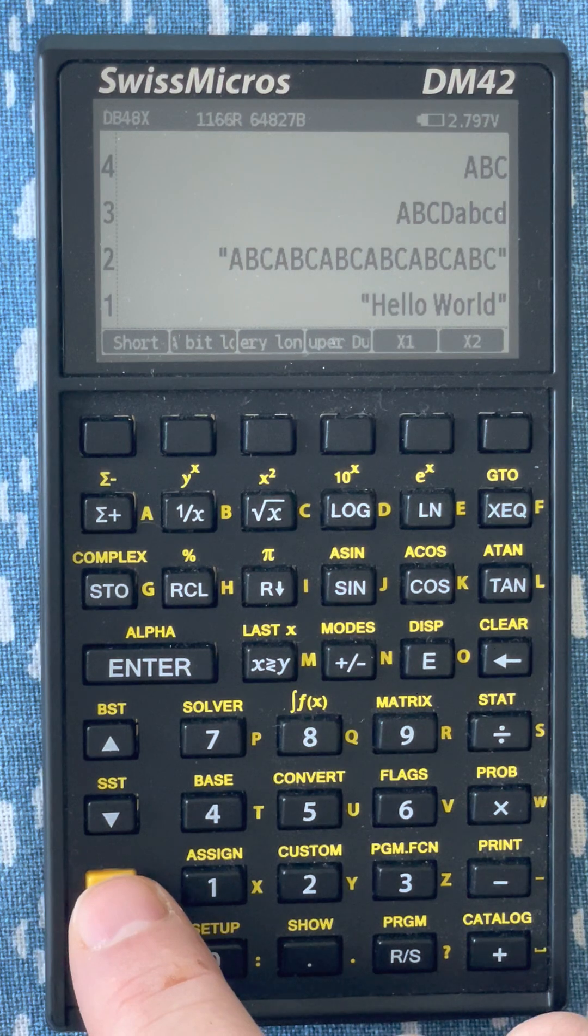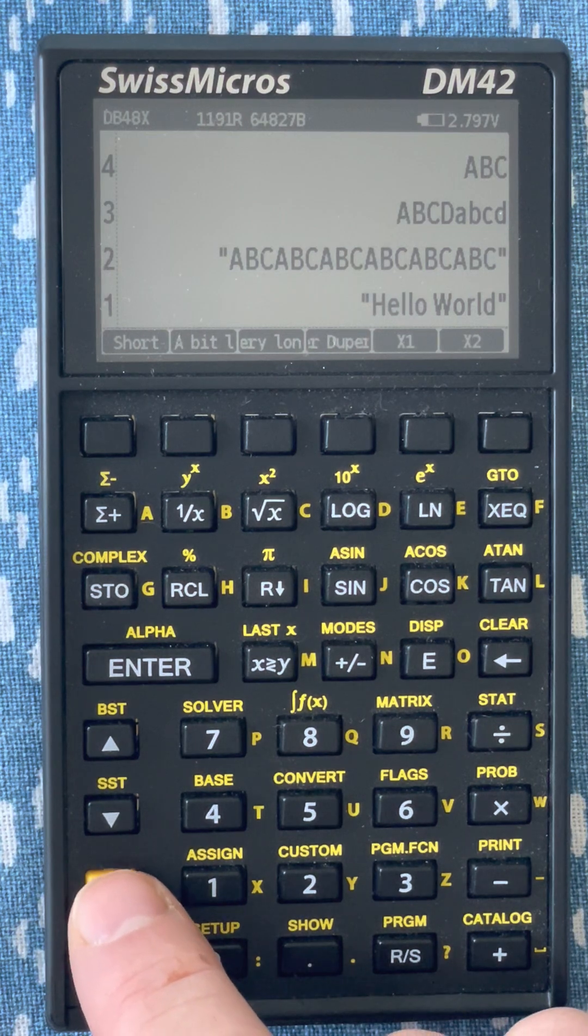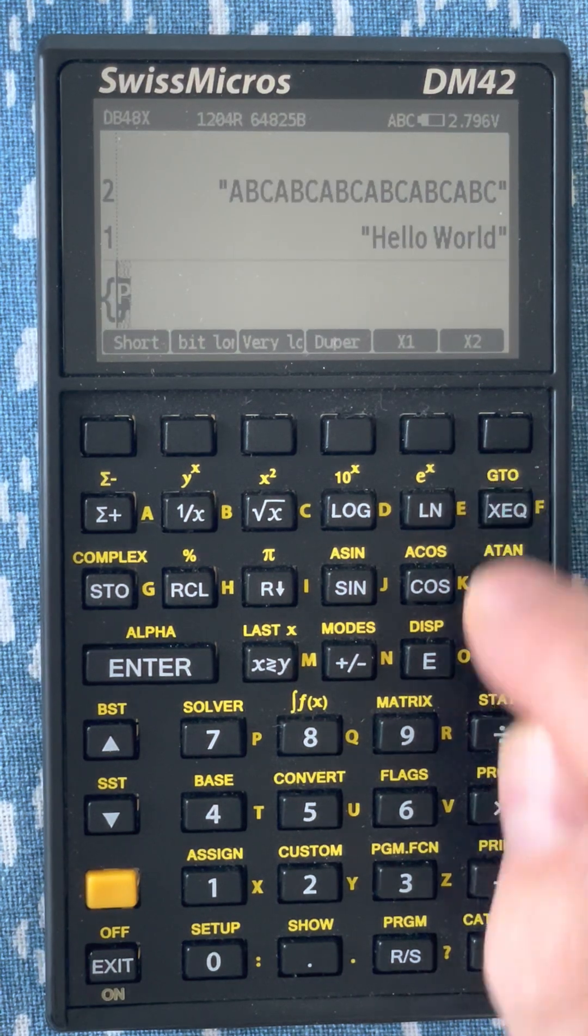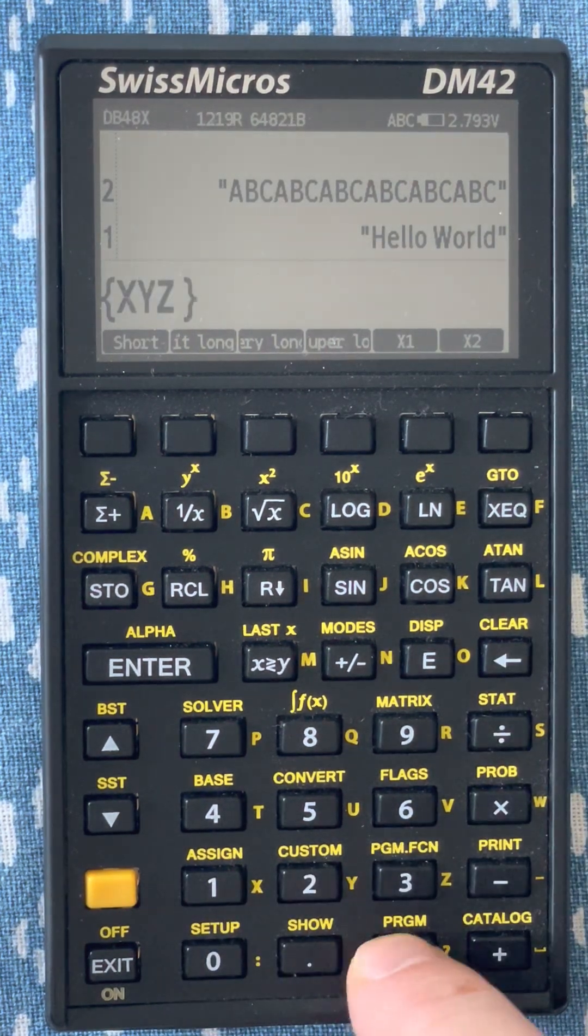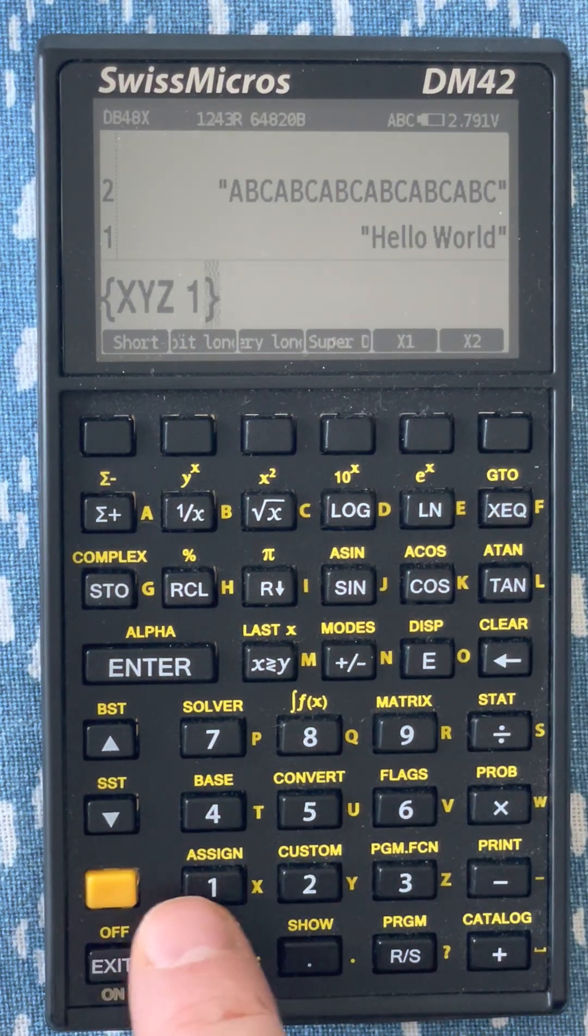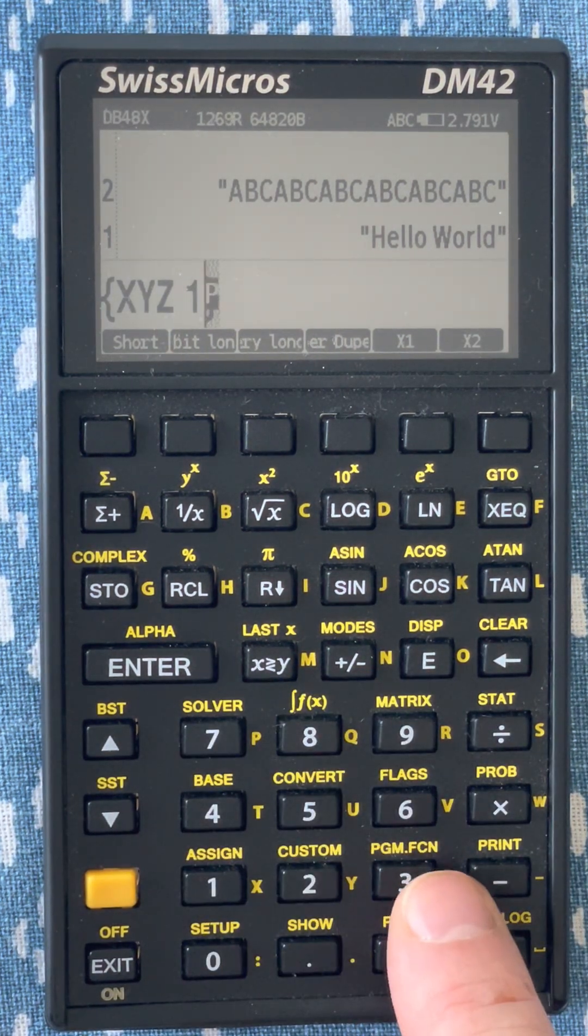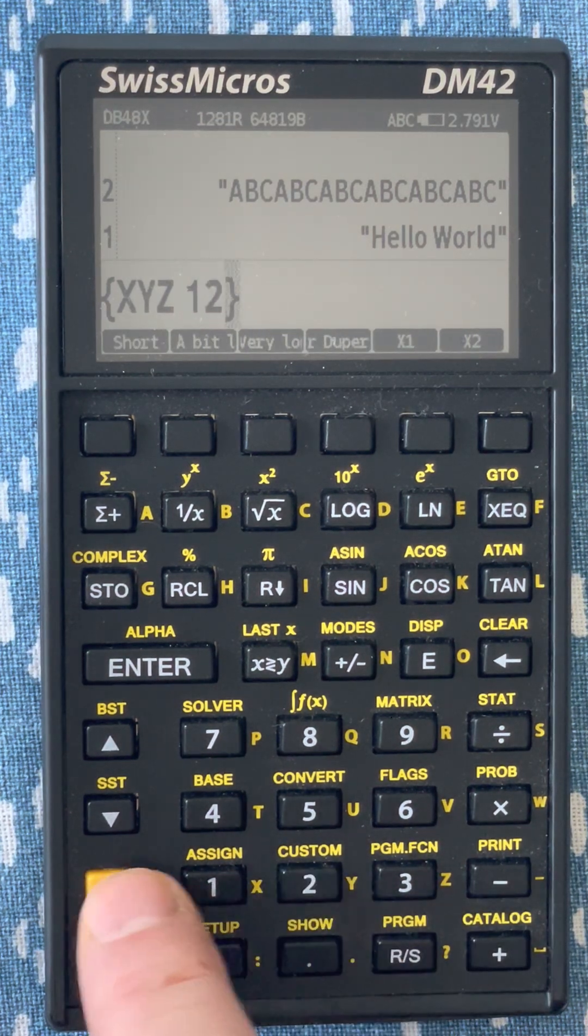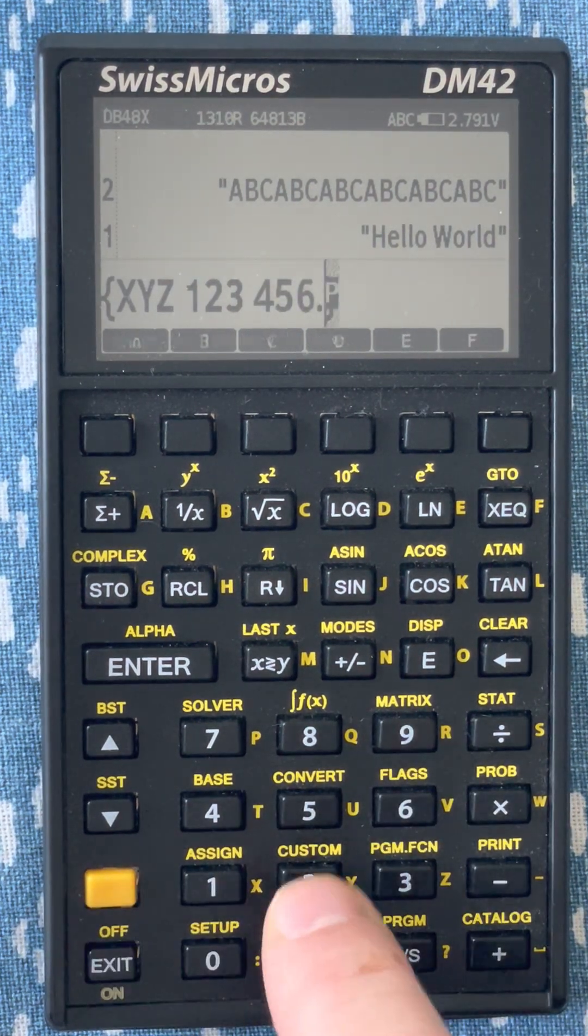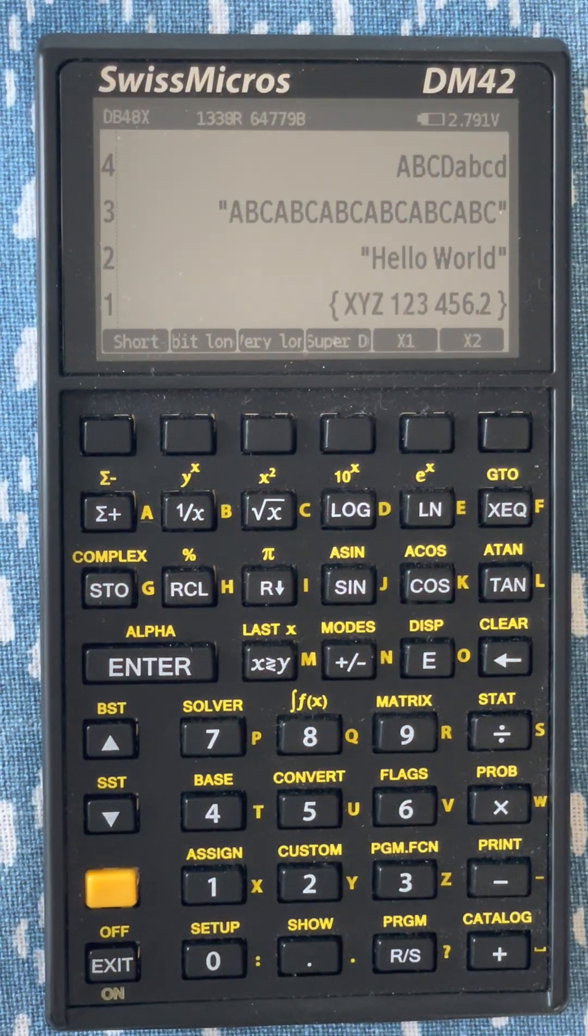There are other data types, but they are not really functional yet. For instance, I can enter lists. You may have noticed that because there are fewer keys than the HP 48, the numbers are converted to keys. So if I use shift, I can enter numbers that way. And that's an RPL list.